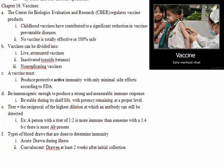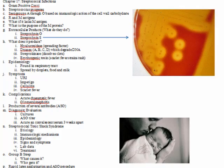The definition of titer is the reciprocal of the highest dilution at which an antibody can still be detected. A person with a titer of 1:2 is actually less immune than someone with a titer of 1:4. We already talked about acute and convalescent specimens, so no need to review that again.